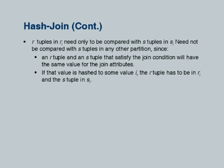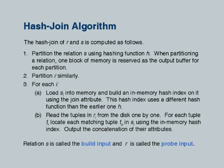The details of how to do the hashing and each step of the algorithm are in the slides. The relation on which we build an index is called the build relation. The smaller relation is usually chosen as the build relation because the number of pieces into which we need to partition it to ensure each one fits in memory is less.